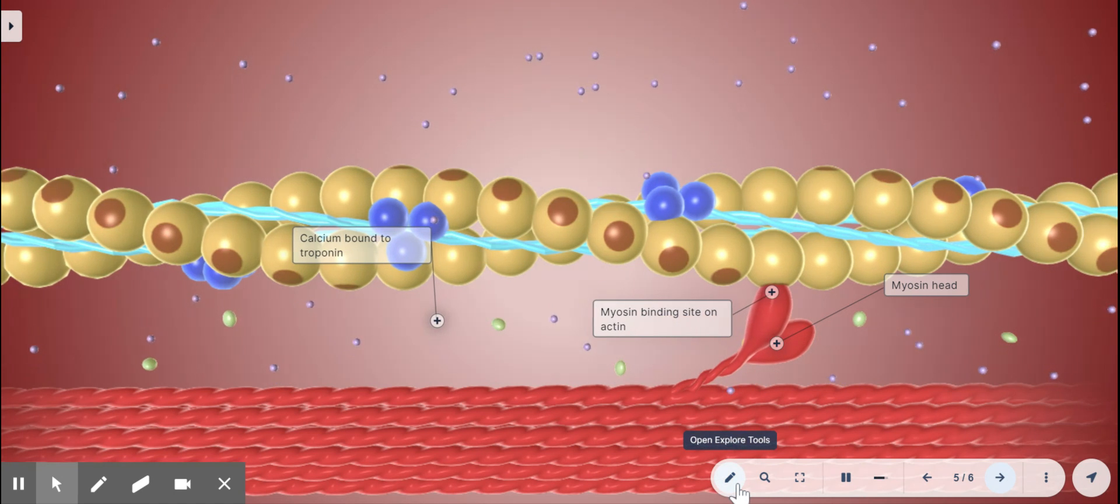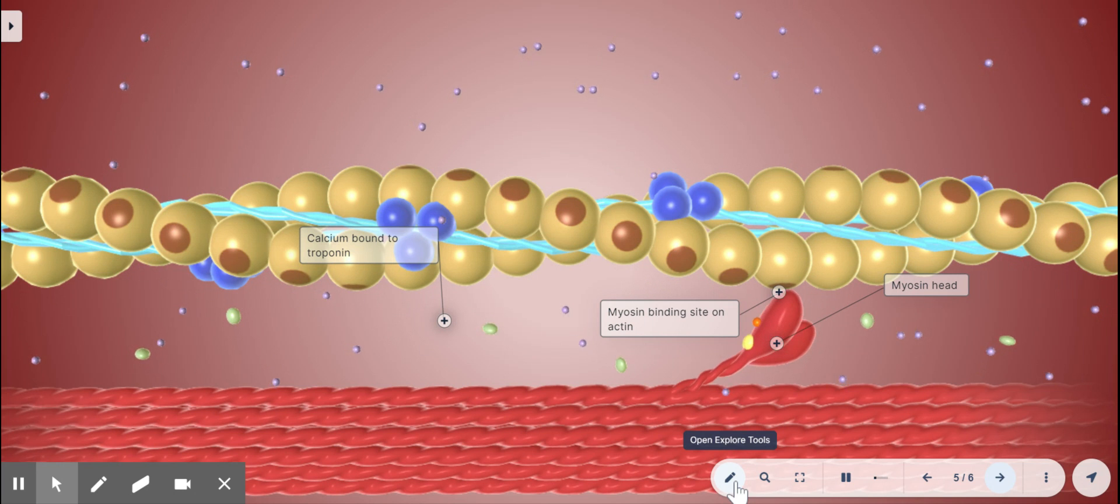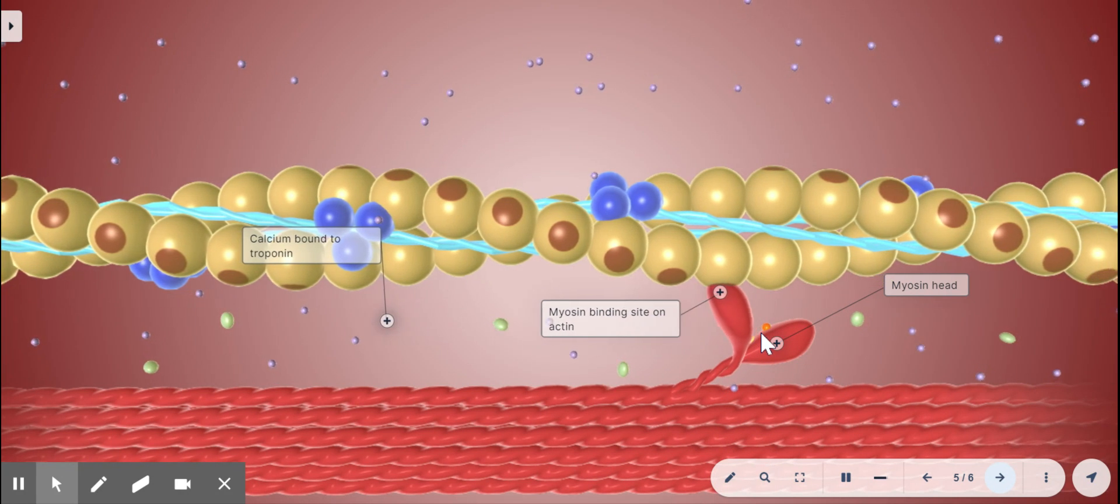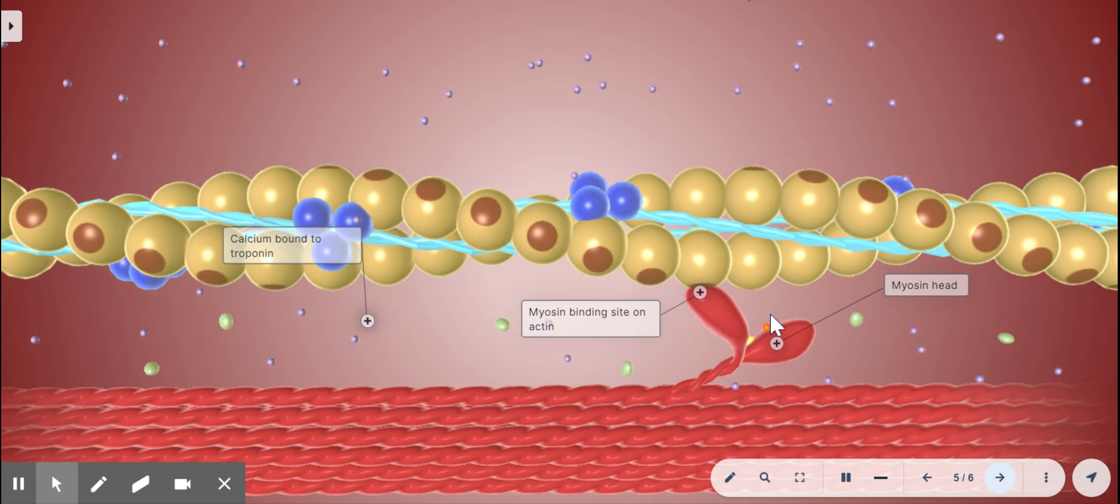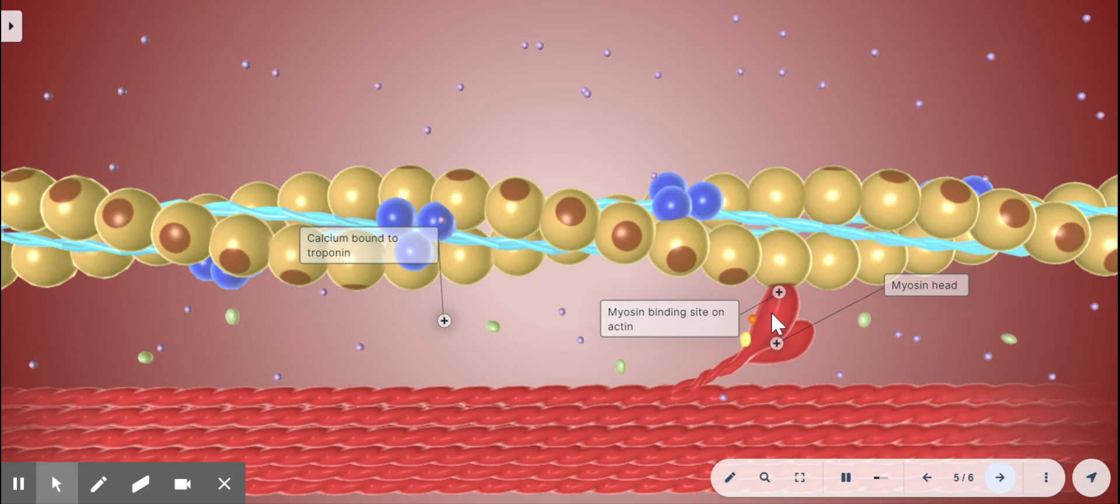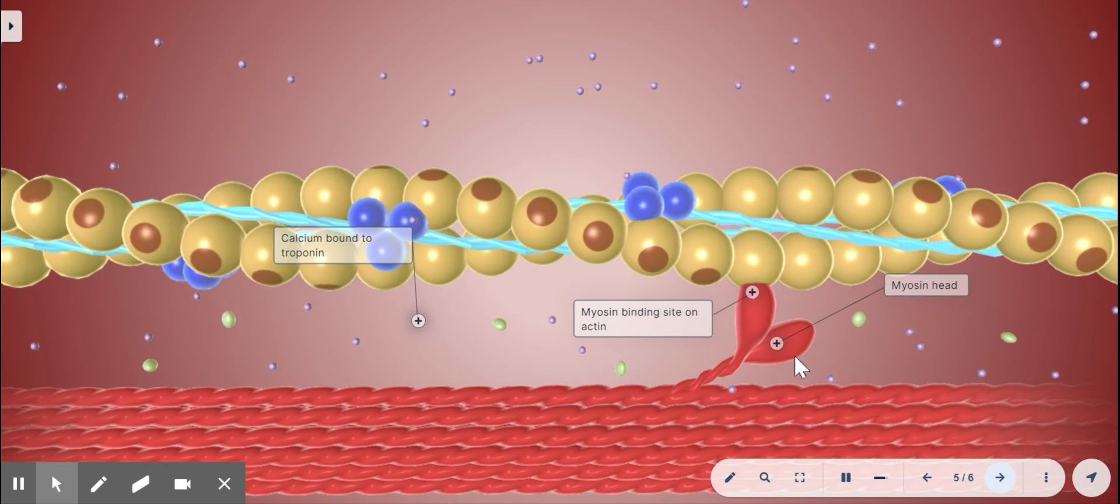After the crossbridge forms, the myosin head rotates towards the center of the sarcomere. And as it rotates, the myosin releases that ADP and phosphate. And this action slides the thin filament past the thick filament, creating what's called a power stroke.